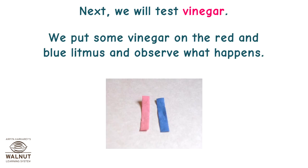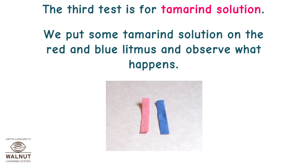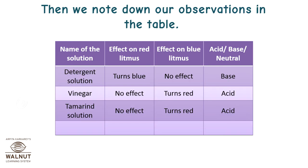Next, we will test vinegar. We put some vinegar on the red and blue litmus and observe what happens. Then we test tamarind solution. There was no effect on the red litmus paper while the blue litmus paper turned red. Therefore, tamarind solution is acidic.